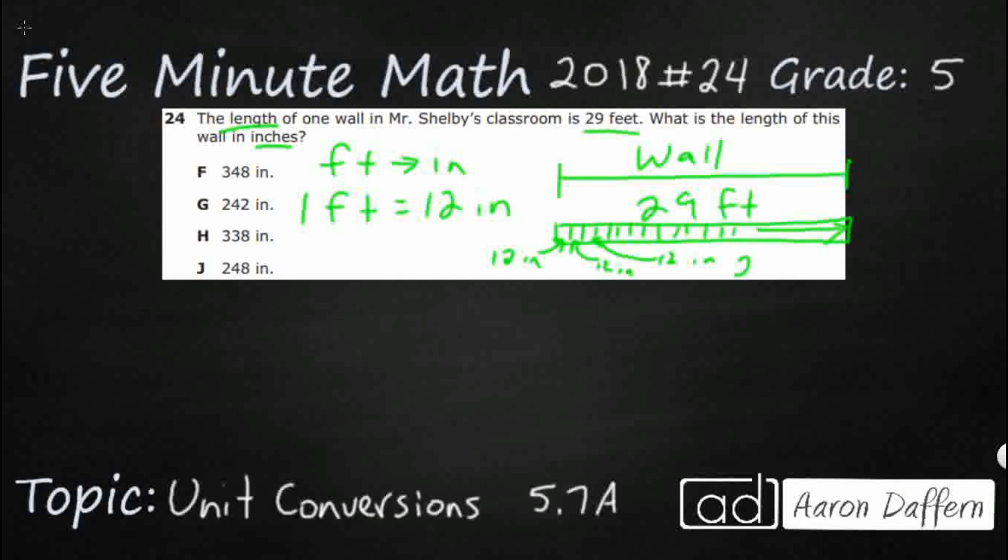So there's 29 sets of this 12 inches all the way over, and so we're gonna need to multiply. And that's when we're doing unit conversions, it's going to be easier to remember. Think of unit conversions: if you're going from big to small, so feet that is larger than inches, from big to small you're going to multiply.